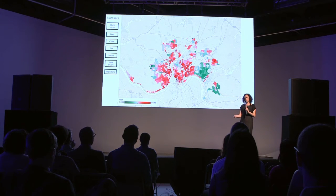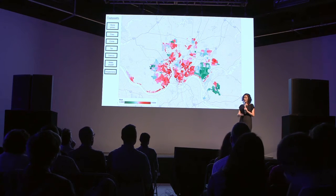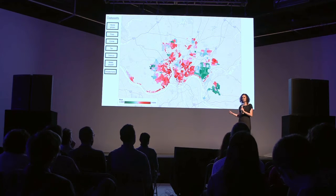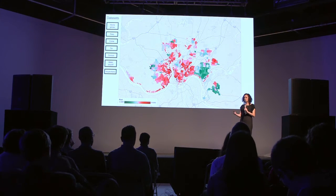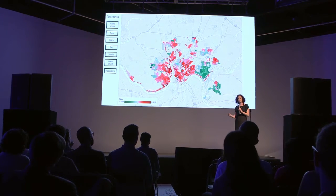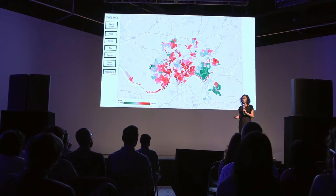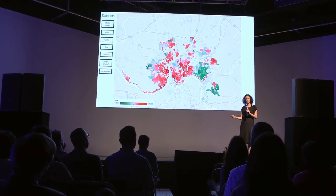In this map, every point represents a building and its probability of having a building violation — red meaning a very high probability, and green meaning a very low probability. There are some very healthy areas in Cincinnati, while others are struggling. Our model currently predicts areas that have been suffering for years, and that's why we're working with the city to validate it and identify areas that are on the tipping point and might still be salvageable.